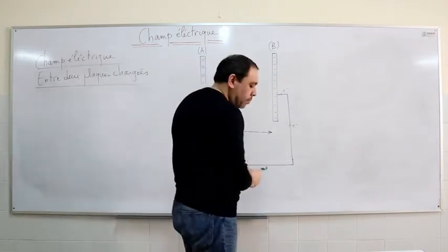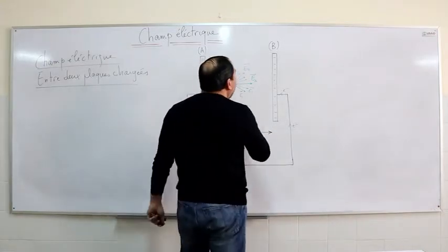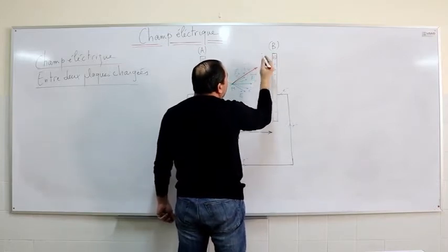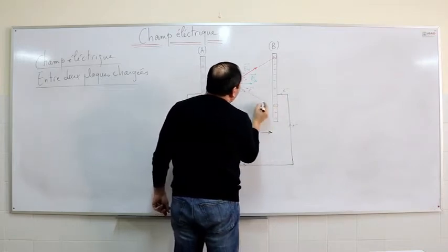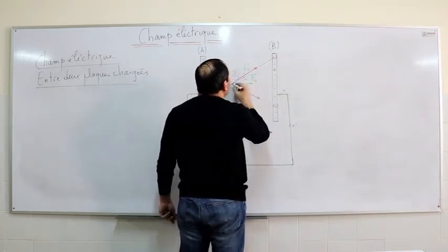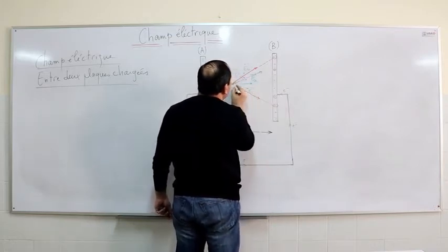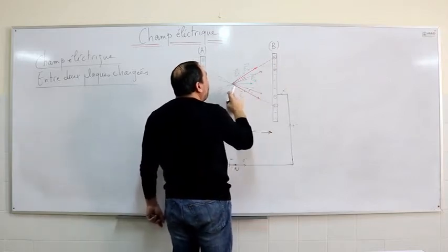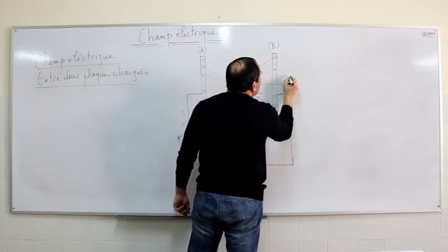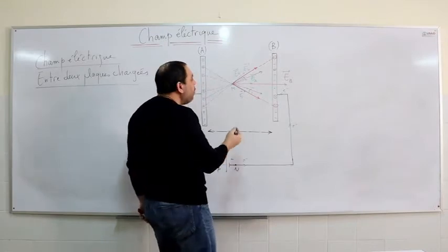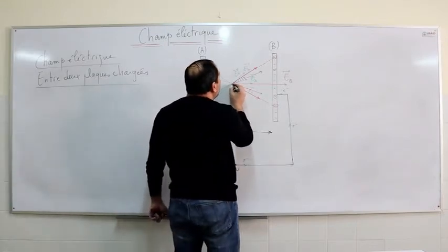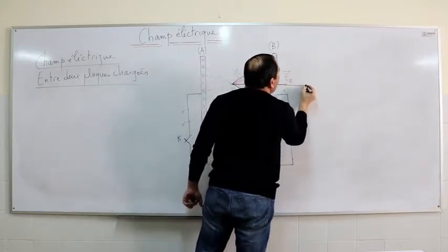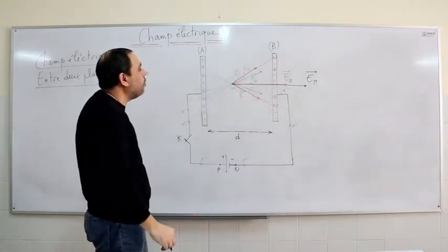Now let's consider plate B. At the same point M, each point charge on plate B creates an electric field. For example, E1', and similarly for other charges. The sum of all these fields created by plate B at point M is in this direction — let's call it EB. The resultant electric field vector at point M is the resultant of EA and EB, and hence it is in this direction — this is EM.